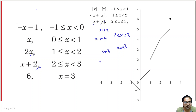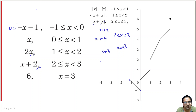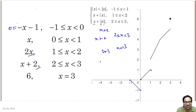We know how to draw this function. For minus x minus 1: when x is 0, y is minus 1; and when y is 0, x is minus 1. That is this graph. Then between 0 and 1, the function is x — that is this graph from 0 to 1. Between 1 and 2, the function is 2x: it starts from 2 and goes to 4, since 2 times 2 is 4.